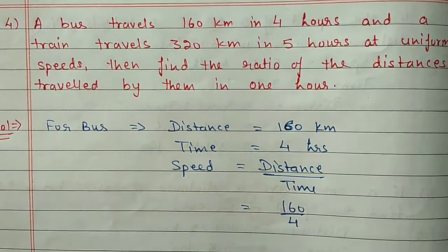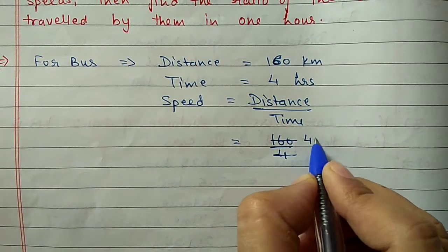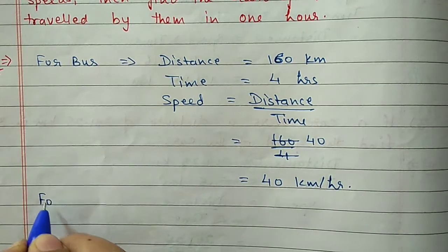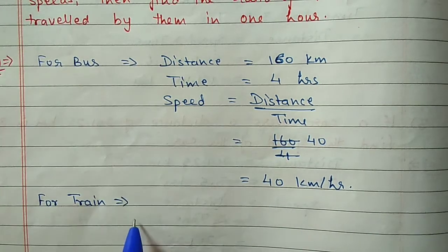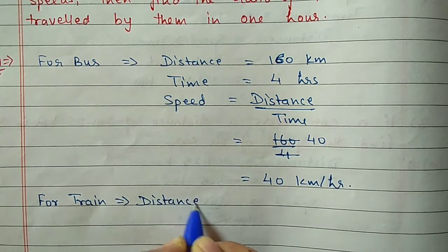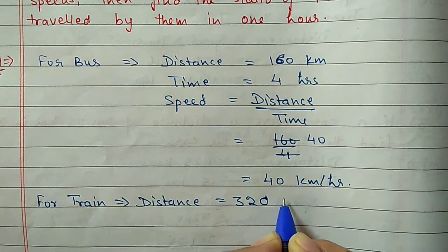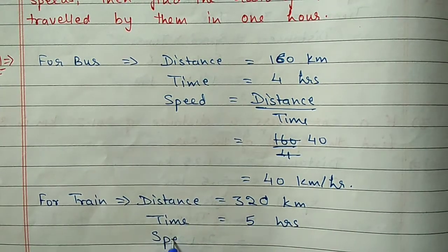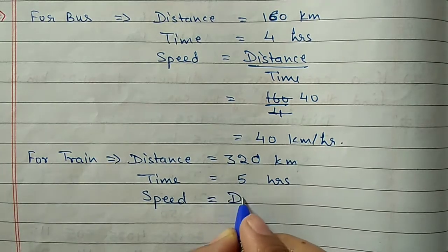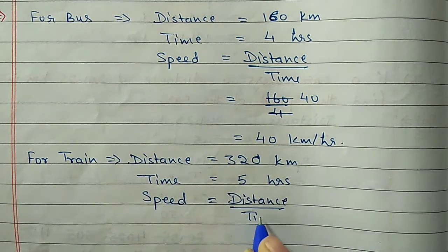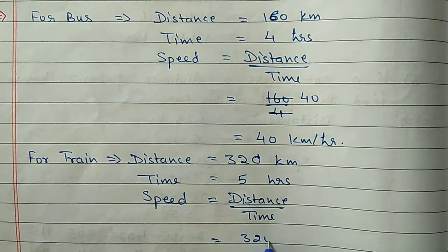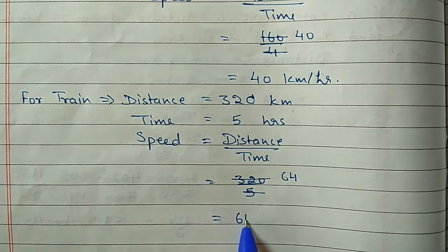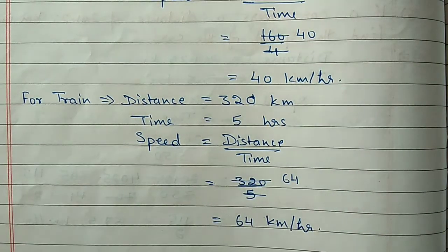Bus speed = 160 by 4 = 40 km per hour. For the train: distance is 320 km, time is 5 hours. Train speed = 320 by 5. Cancelling with 5: 5 × 6 = 30 and 5 × 4 = 20, so train speed = 64 km per hour.